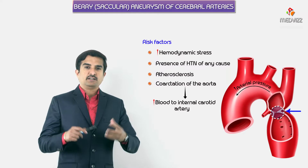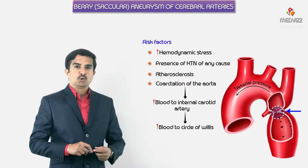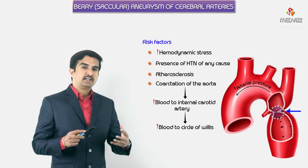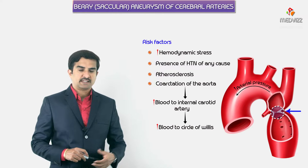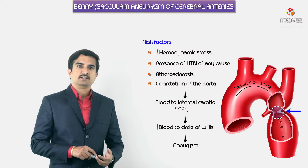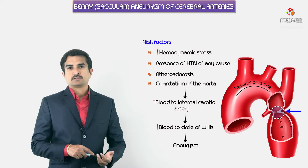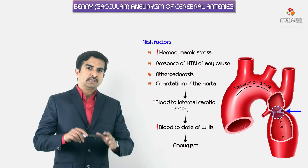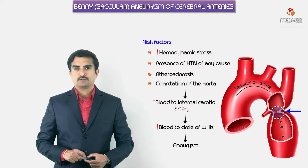Because of this constriction and the increase in backward pressure, more blood is diverted towards the internal carotid artery. From the internal carotid artery, more blood is pumped to the circle of Willis, so any weakest point in the circle of Willis becomes vulnerable to the development of aneurysms. That is why hypertension, atherosclerosis, and coarctation of the aorta are all considered etiological factors.